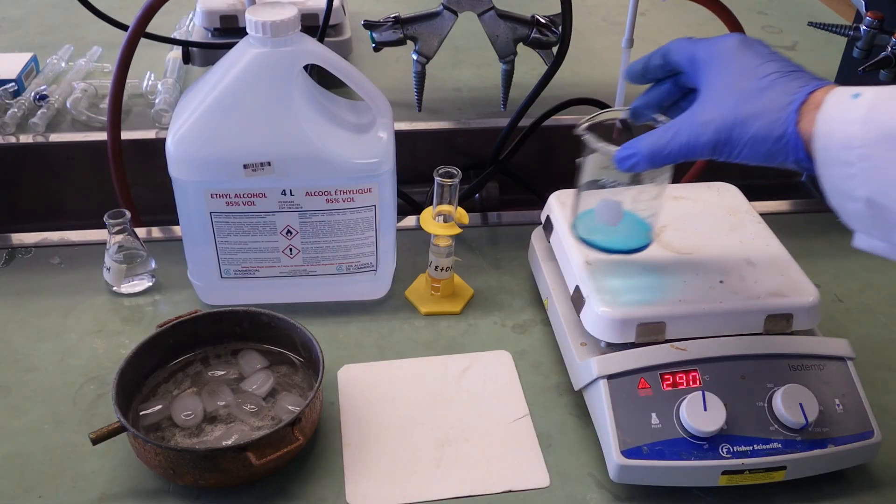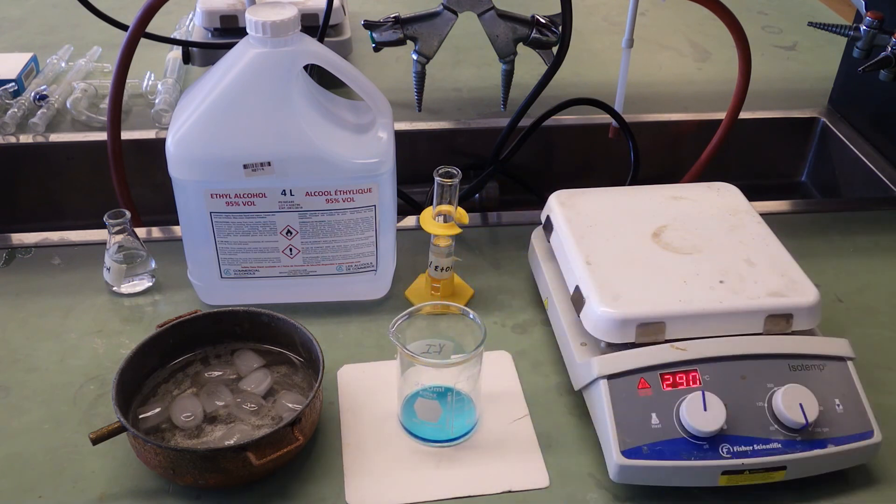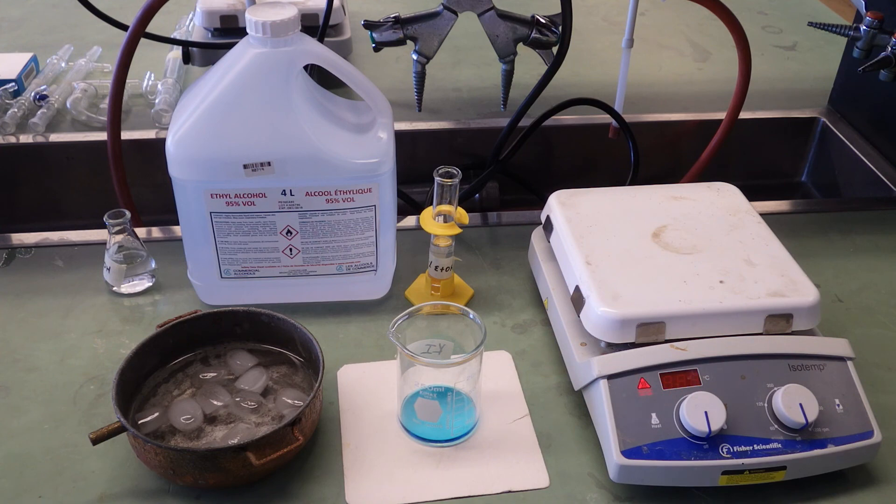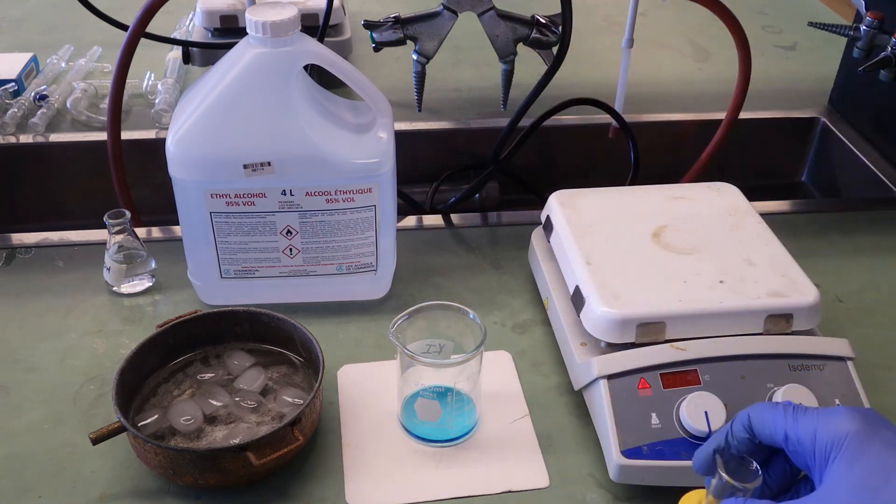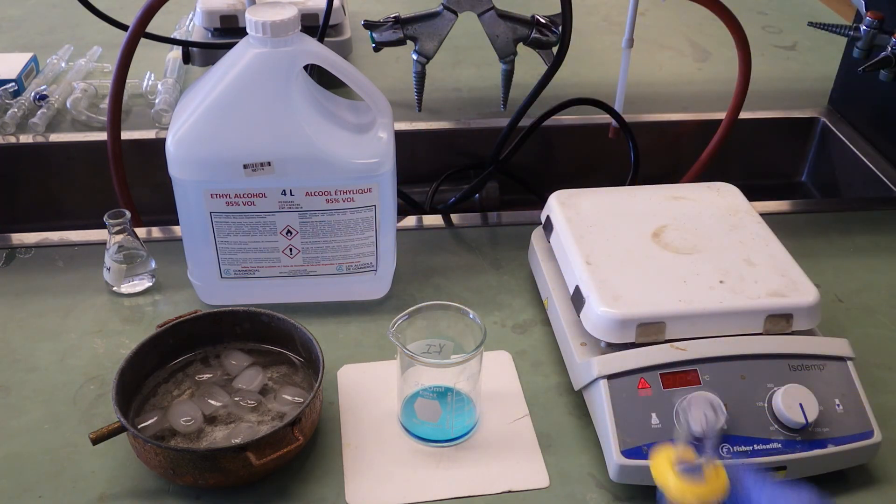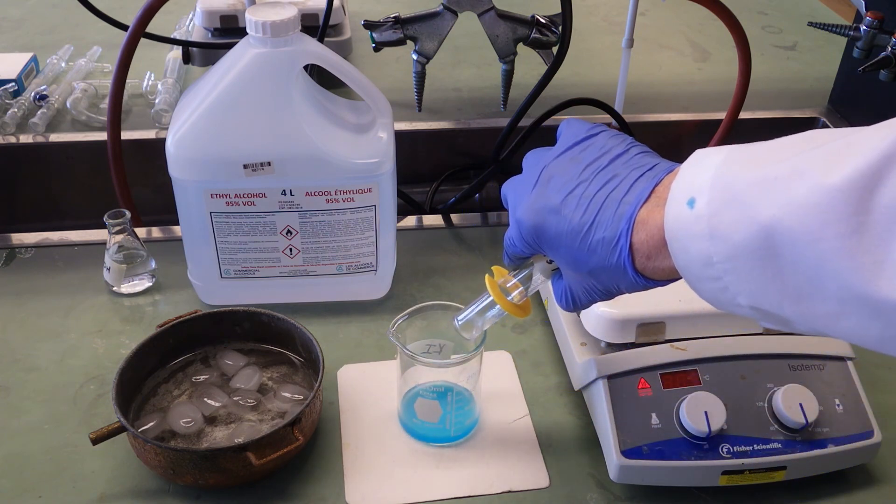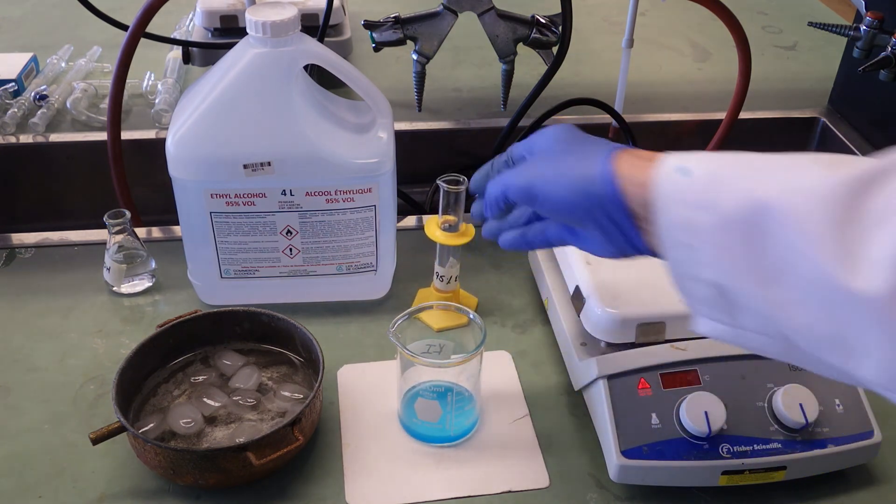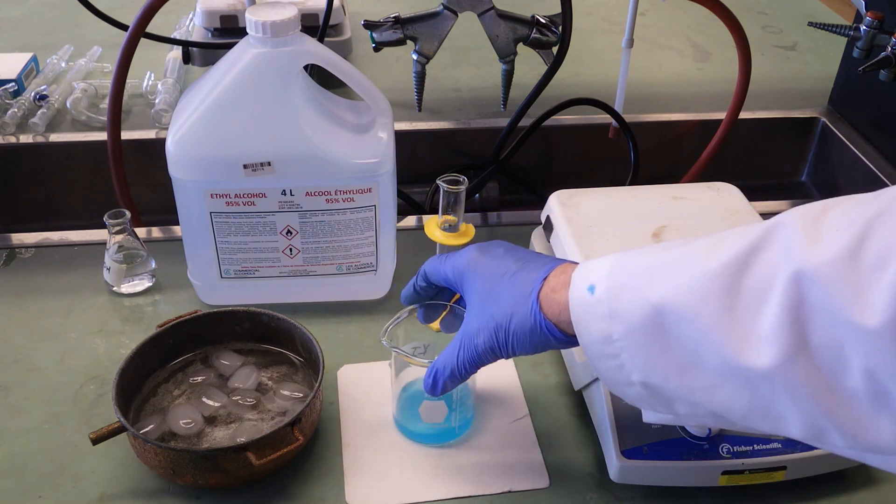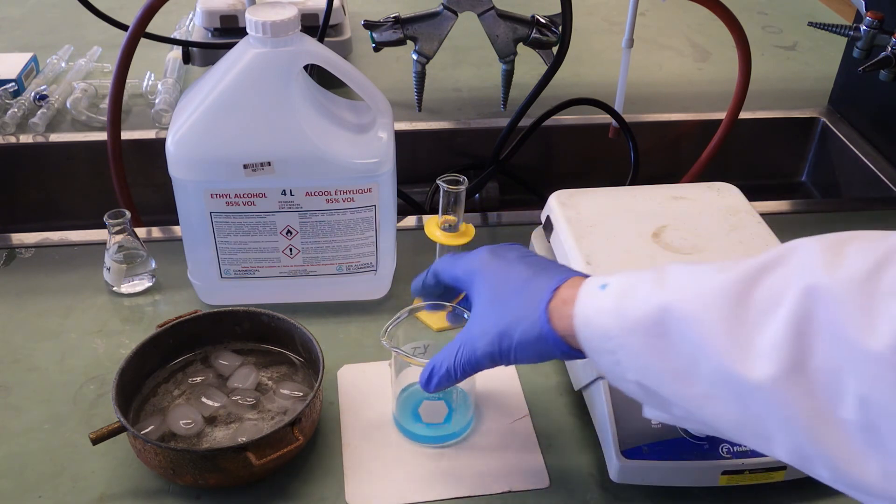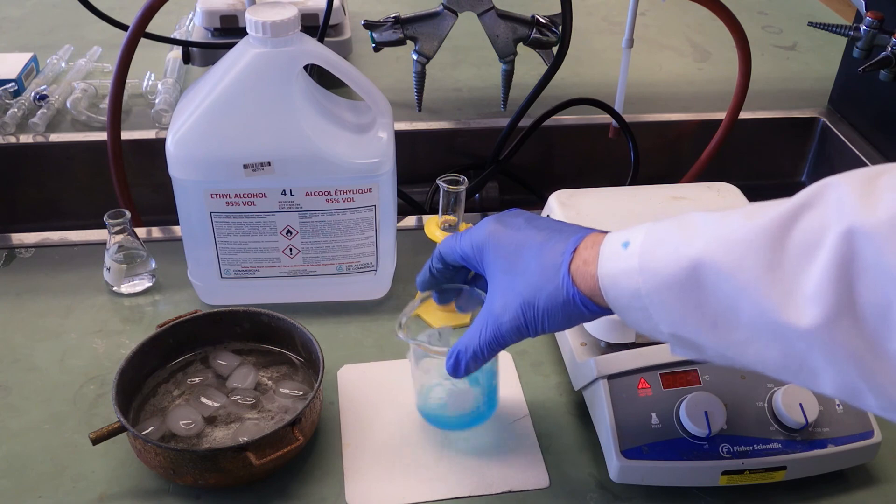So our solution has boiled down to 15 mL or less. We're now going to add 15 milliliters of ethanol. CSP has low solubility in ethanol, so it will come out of solution. We have to get it out of solution, otherwise we won't collect it.